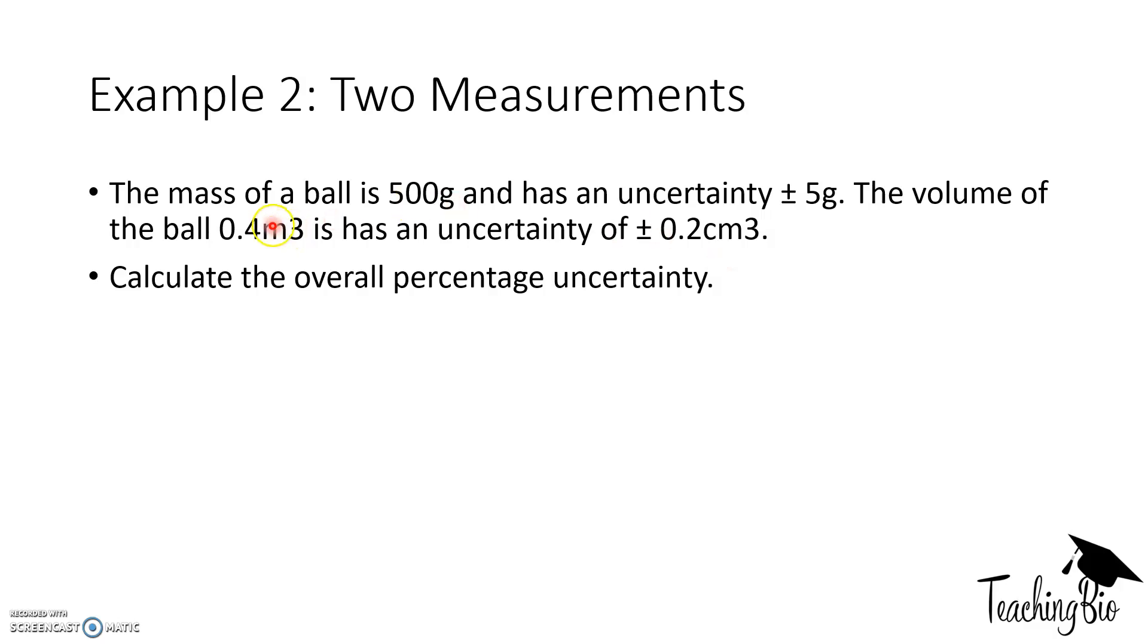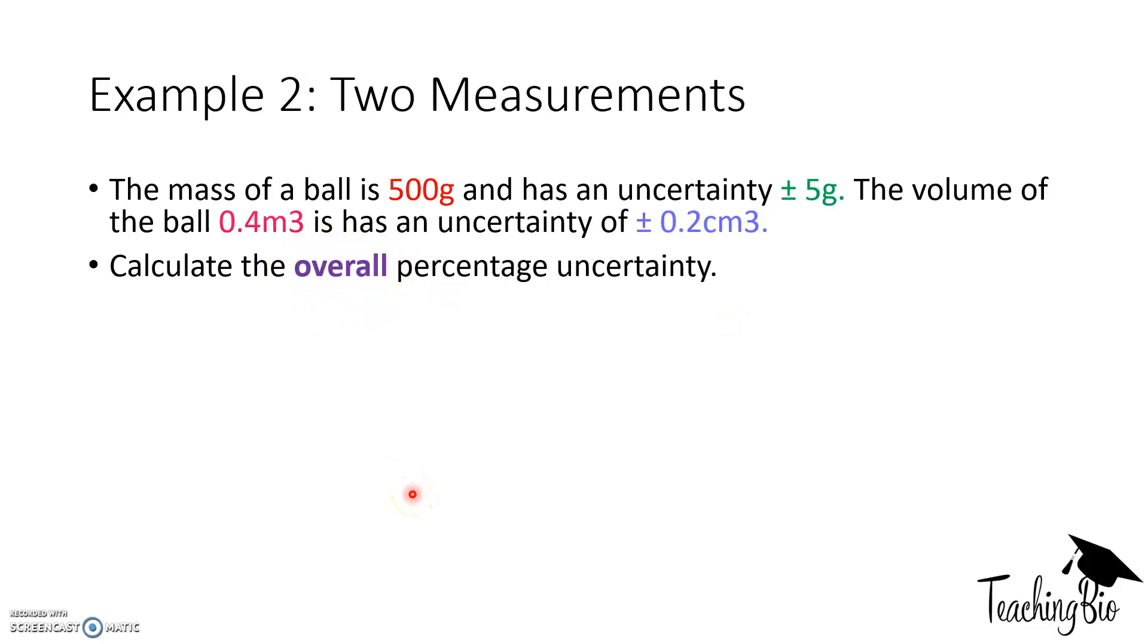Okay, again, here's another question we're going to do. The mass of a ball is 500 grams, and has an uncertainty of plus or minus 5 grams. The volume of the ball is 0.4 meters cubed, and it has an uncertainty of 0.2 centimeters cubed. Calculate the overall percentage uncertainty. So let's pick apart the numbers. We've got 500 grams, which has an absolute error of plus or minus 5 grams, and 0.4 meters cubed, which has a plus and minus volume of 0.2 centimeters cubed. We need to work out the overall percentage uncertainty. So we're going to work out the percentage uncertainty for the mass of the ball, and the percentage uncertainty of the volume of the ball. We take 5 grams, divide it by 500, times by 100, 1%. So the uncertainty of the mass of the ball is 1%.